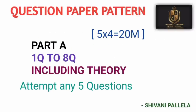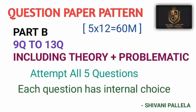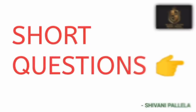In Part A, questions 1 to 8 will be given and you need to attempt any five, each carrying four marks — including theory as well as problematic. Out of eight questions, about five questions will be theory and three will be problematic. Three sides of the answer is compulsory, but mostly try to attempt problematic questions. Don't depend only on theory. For short questions in Part A, the answer should be written minimum one side or one and a half sides of the page.